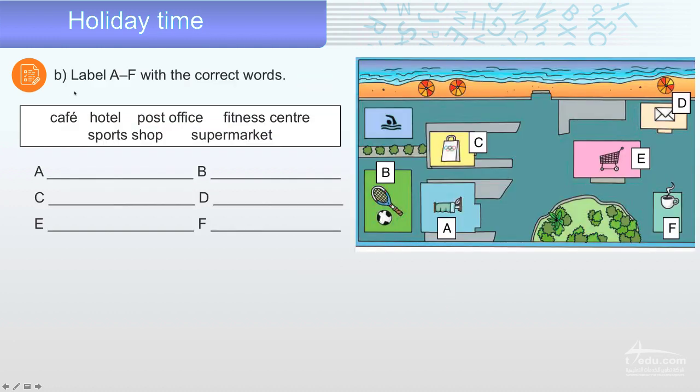Now, label A to F with the correct words. Cafe, hotel. Where is a cafe? Hotel, post office, fitness center, sports shop, supermarket. So, label it. And we have here the letter A, B, C, D, E, F. For example, A, what is this? You can choose from these words. Give you a moment. Think about it. A, B, C, D, E, F.